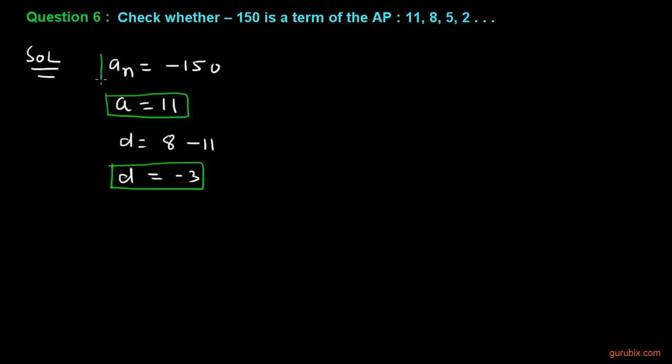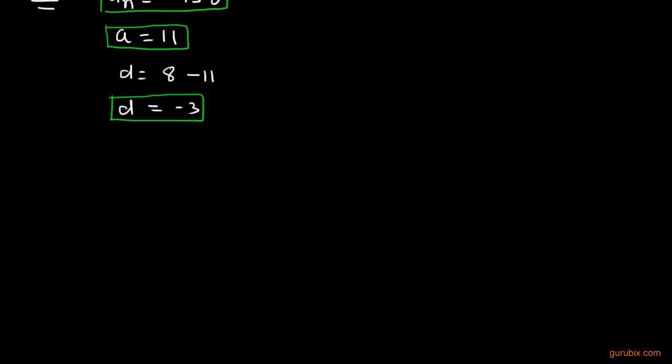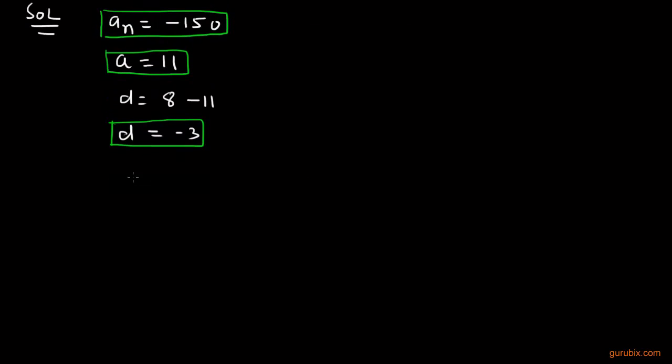First term is a, and the nth term is -150. This is very important. Now we shall use the general term, the formula of general term, to check whether this -150 is a term of the given AP or not.